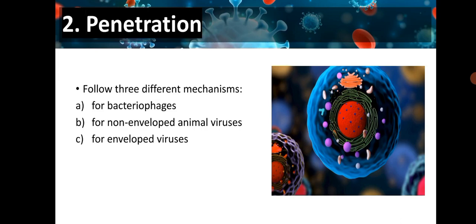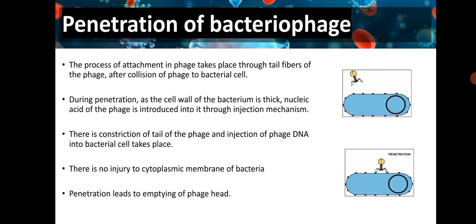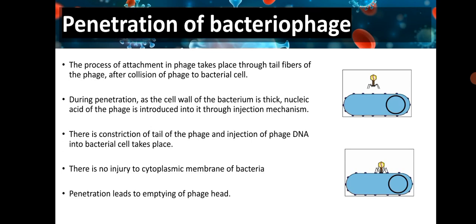Penetration follows three different mechanisms: for bacteriophages, for non-enveloped animal viruses, and for enveloped viruses. For phages, attachment takes place via tail fibers after collision with the bacterial cell. As the bacterial cell wall is thick, nucleic acid of the phage is introduced through an injection mechanism. There is constriction of the tail of the phage and injection of phage DNA into the bacterial cell, with no injury to the cytoplasmic membrane. Penetration leads to emptying of the phage head.